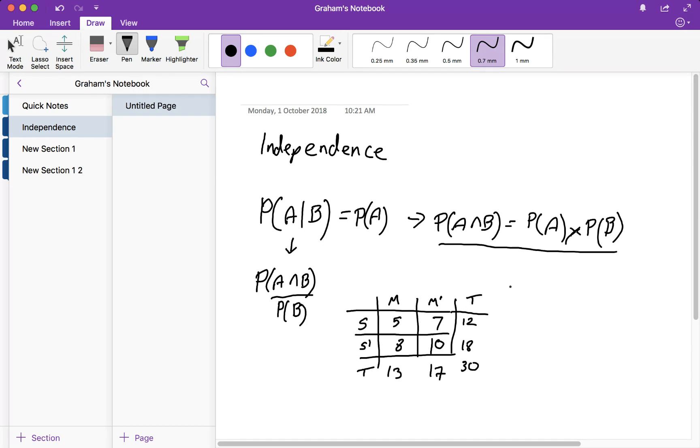Okay, so the probability of music is 13 out of 30. The probability of sport is 12 out of 30.